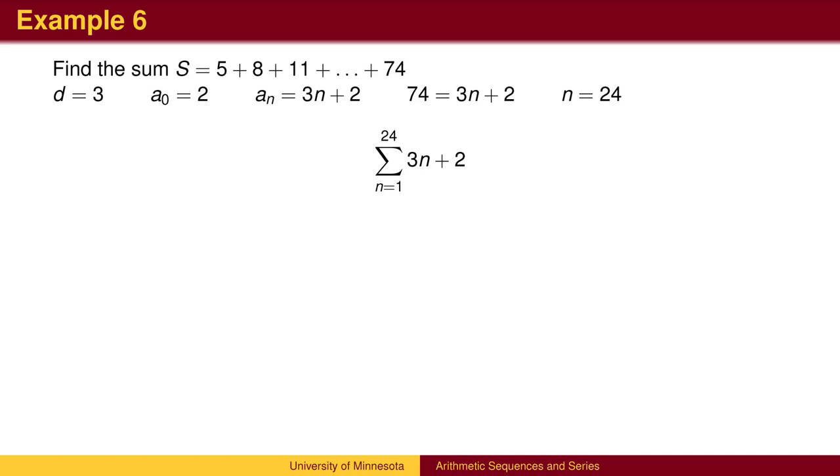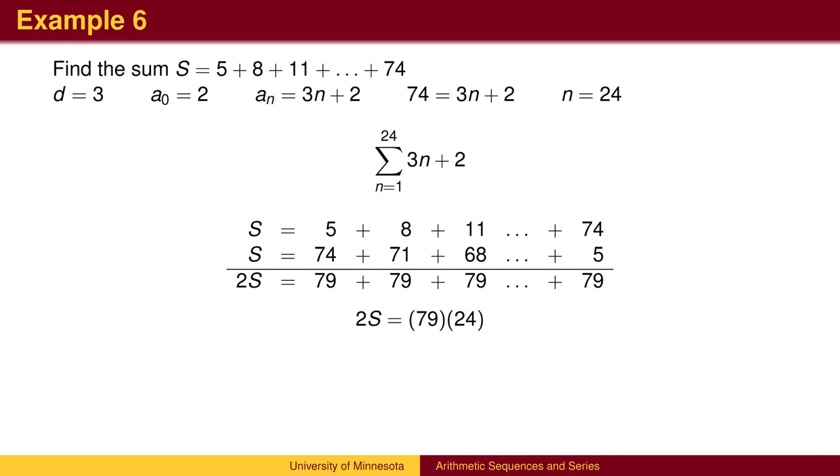We now wish to find the sum of 24 terms. We write the sum forwards and backwards and add vertically, getting 24 copies of 79. Twice the sum is 79 times 24, so the sum is 948.